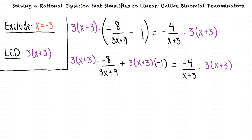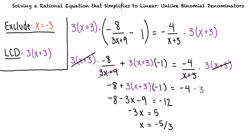We can clear our fractions and simplify the equation. When we do this, we obtain a final answer of x equals negative 5 thirds. Negative 5 thirds is different from the excluded value we determined earlier, so this is our final answer.